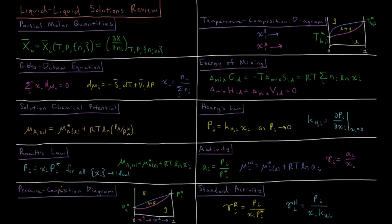We can use this to compute the pressure-composition diagram, which tells us, as a function of the mole fraction of a given substance in solution, what is its mole fraction in the gas phase and in the liquid phase. There is also a region at various pressures where gas and liquid coexist. Temperature-composition diagrams show how the boiling point varies from that of one pure component to the other as mole fraction changes, with discrepancies in mole fraction between liquid and gas phases due to differences in boiling points.